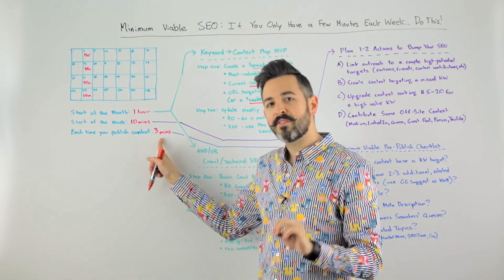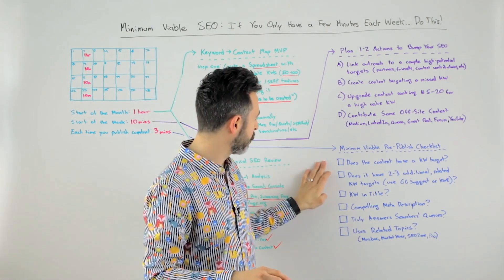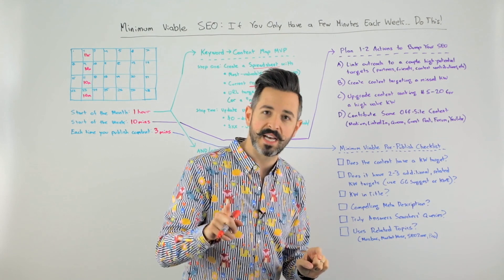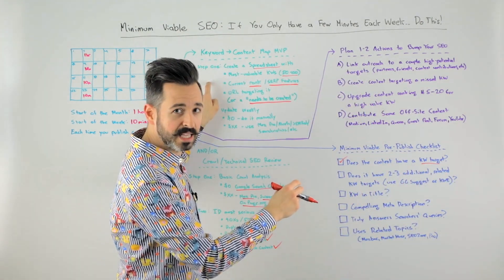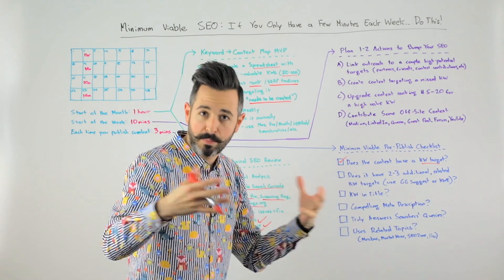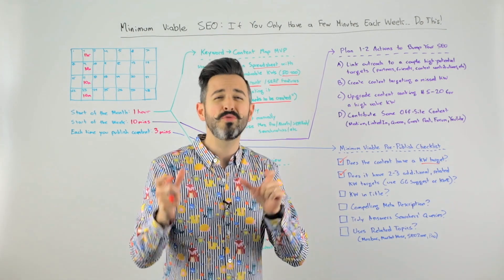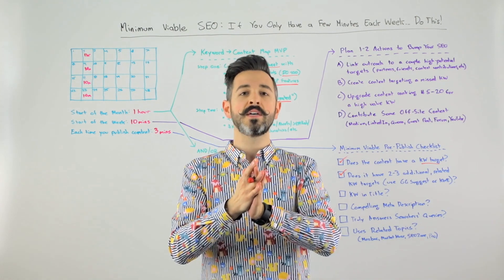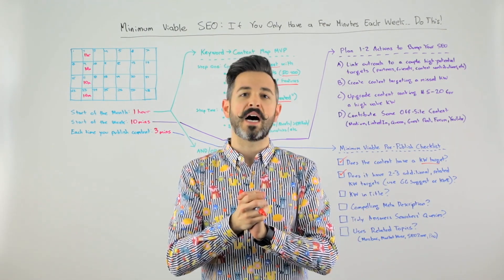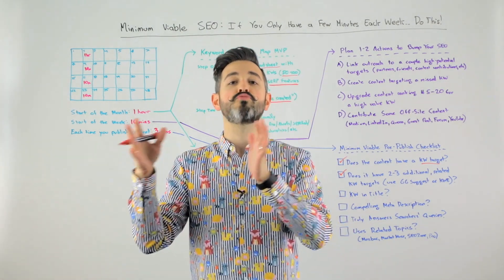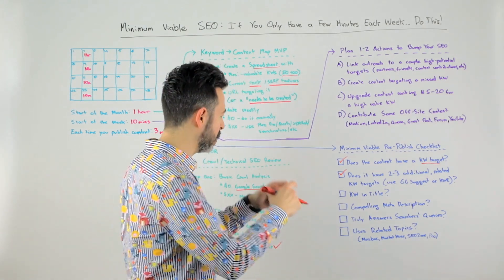Every time you publish a piece of content, I'm going to ask for just three minutes for this minimum viable pre-publish checklist. Does the content have a keyword target? If not, refer to your keyword content list and make sure it does. Make sure each piece of content has a keyword target, and if you can, also target two to three additional related keywords. For example, if I'm going after 'Fabergé eggs,' I probably also want to target 'Carl Fabergé,' 'Fabergé eggs museums,' or 'Fabergé eggs replicas' — other terms and phrases people are likely searching for with the same or similar intent that could live on the same page.